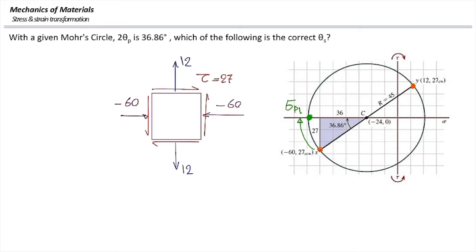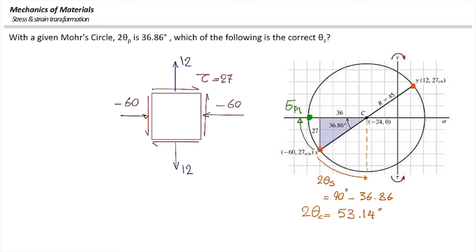The maximum shear stress corresponds to the top or bottom of the Mohr circle. Considering the bottom, we rotate from the current point clockwise to the bottom of the circle. The remaining angle is 90° − 36.86° = 53.14°, and dividing by 2 gives theta_s = 26.57 degrees. This is the rotation needed to align the original element with the plane of maximum shear stress.